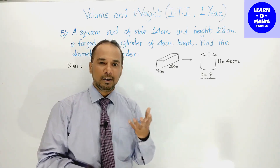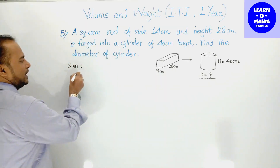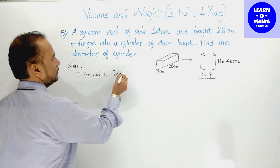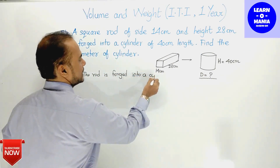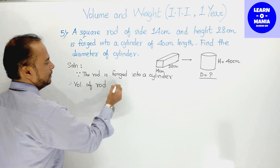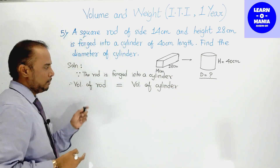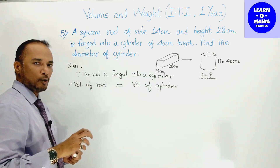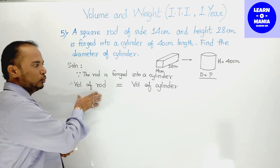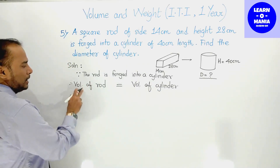Rod को melt करके cylinder बना है, तो जो rod का volume है वही cylinder का volume होगा — यह main चीज़ है। Therefore: volume of rod = volume of cylinder।